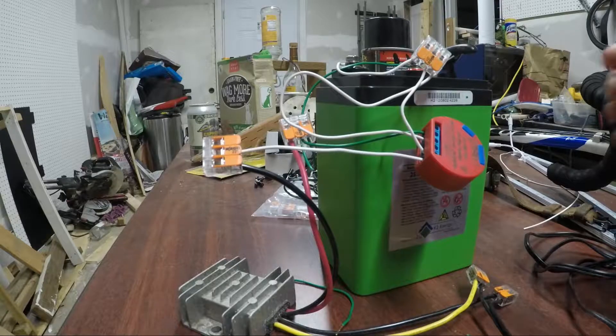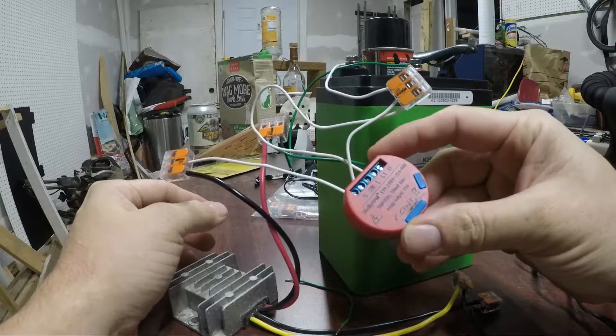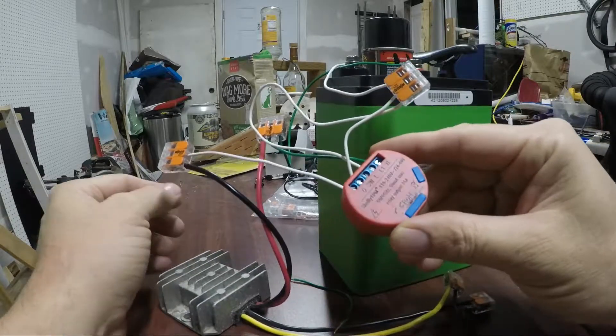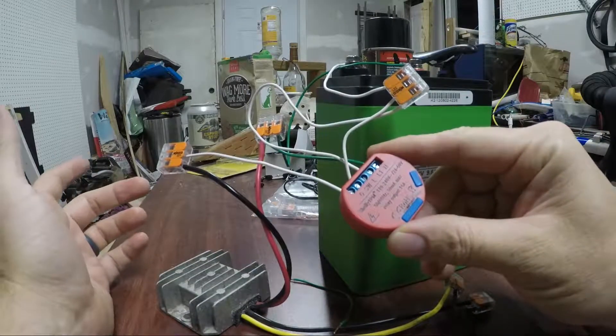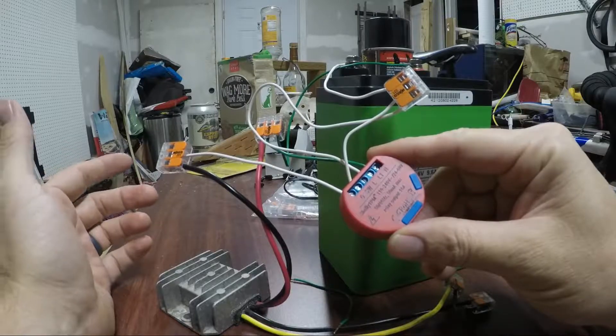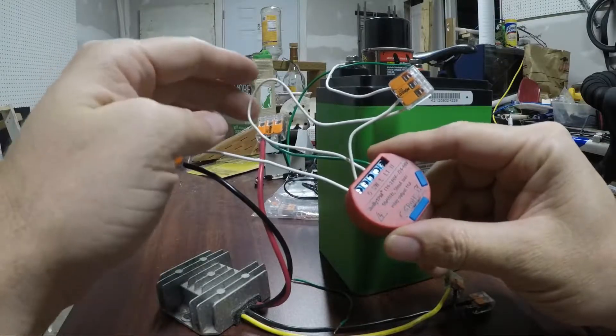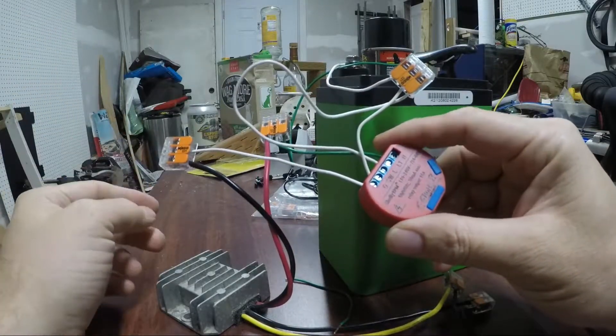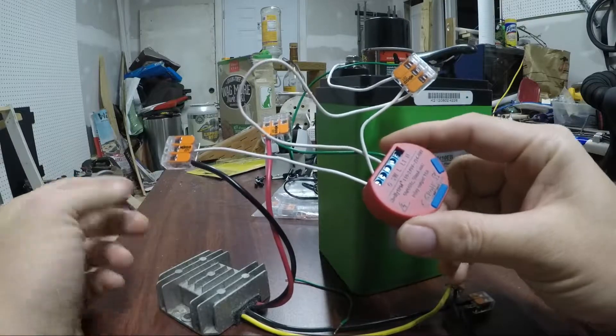Alright, this is just going to be a quick video on the Shelly 1PM for how to wire it for DC loads. The documentation out there is incredibly slim and I had to just kind of figure this out on my own. So just for everybody else's sake, here it goes.